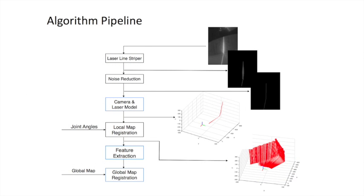In our algorithm, we feed each individual image captured by the camera into the laser line stripper and get the rough position of the laser line. Then we do noise reduction. The refined laser line position is fed into the camera and laser model, and we can solve the three-dimensional coordinates of all the points on the laser line. Combined with the joint angles, we can generate a local map. Feature points are extracted from the local map in order to find correspondence between different local maps. Finally, all local maps are registered to a global map and the motion of the snake robot is estimated.